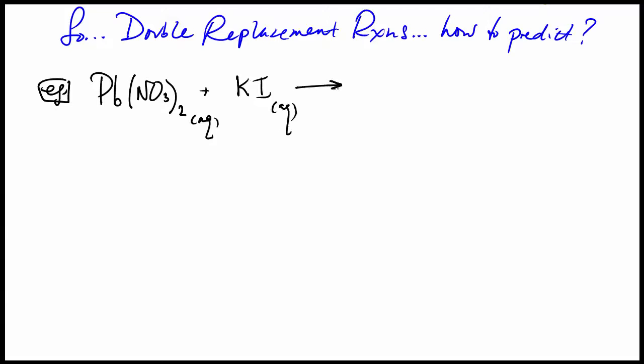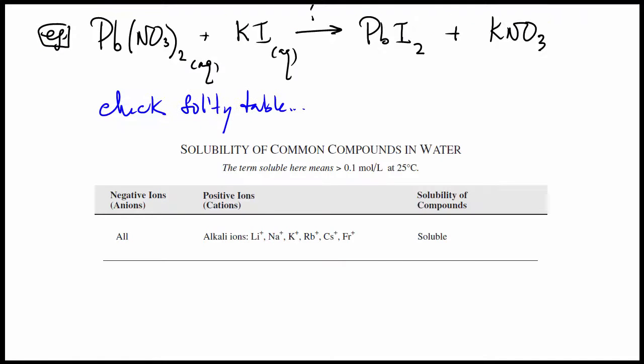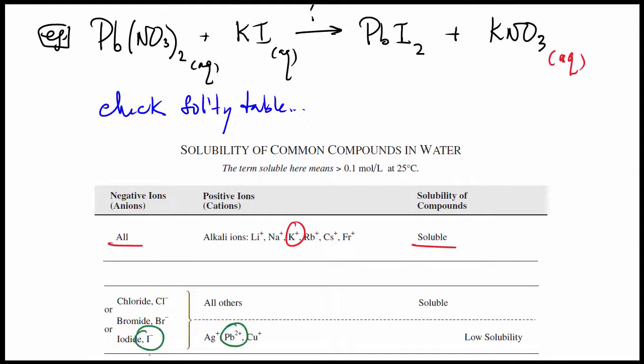This is lead 2 nitrate and potassium iodide, both aqueous. What will happen? If we react them together, we can get lead 2 iodide and potassium nitrate. We'll just check the solubility table. You can see that potassium is soluble with everything. And you can see that lead and iodide together are insoluble. That'll be a precipitate.